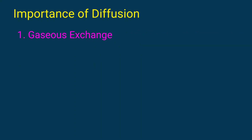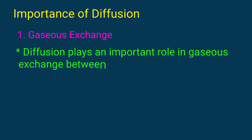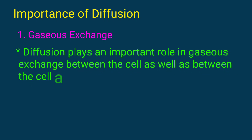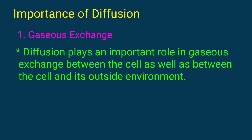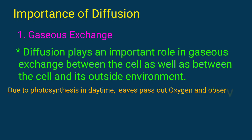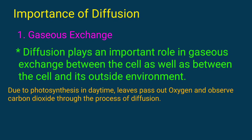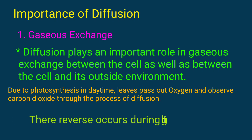Importance of diffusion: Gas exchange. Diffusion plays an important role in gas exchange between the cell as well as between the cell and its outside environment. Due to photosynthesis, in daytime leaves pass out oxygen and absorb carbon dioxide. The reverse occurs during the night through the process of diffusion.